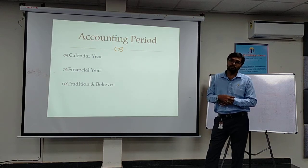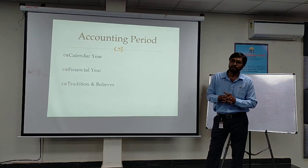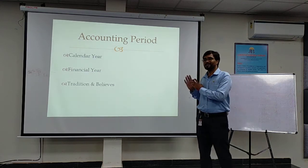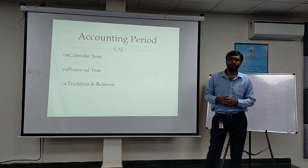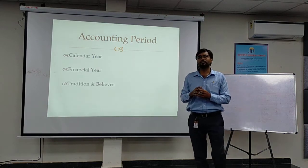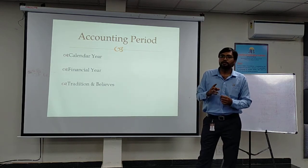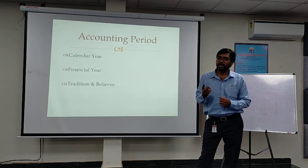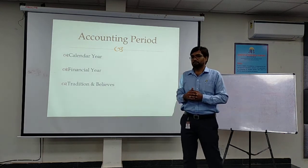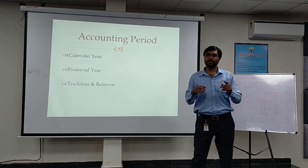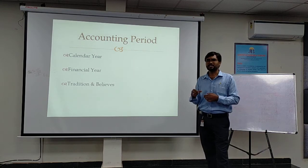Now, accounting periods. We generally have two accounting periods: the calendar year and the financial year. The calendar year runs from 1st January to 31st December. The financial year runs from 1st April to 31st March. Based on tradition and religious beliefs, there is a third type — for example, in Hinduism, people consider Deepavali to Deepavali, or Holi to Holi; in Islam, Ramzan to Ramzan — for calculating taxation and other things.